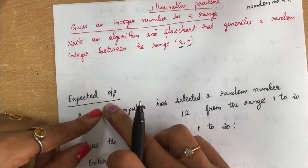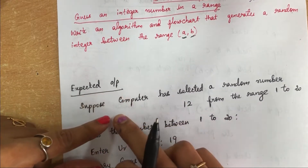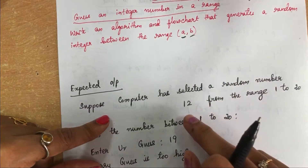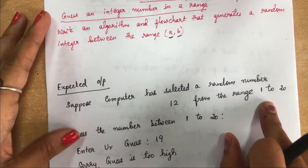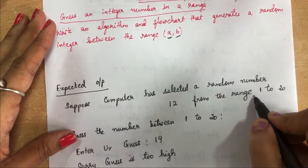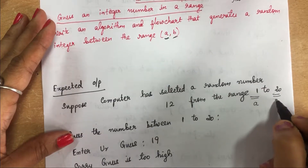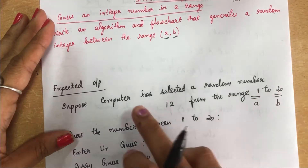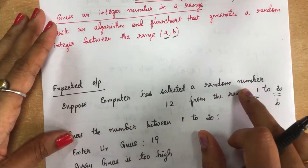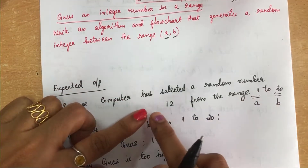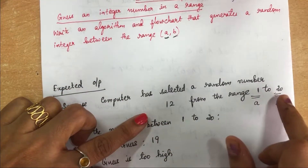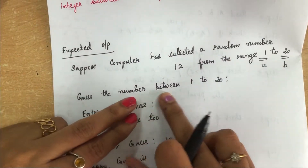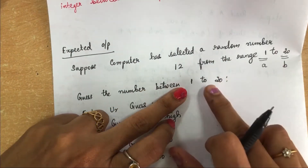Let's look at the expected output. Suppose the computer has generated a random number 12 from the range 1 to 20 — the starting number A is 1 and the ending number B is 20. The computer has selected 12 from this range. We then ask the user to guess a number between 1 and 20.